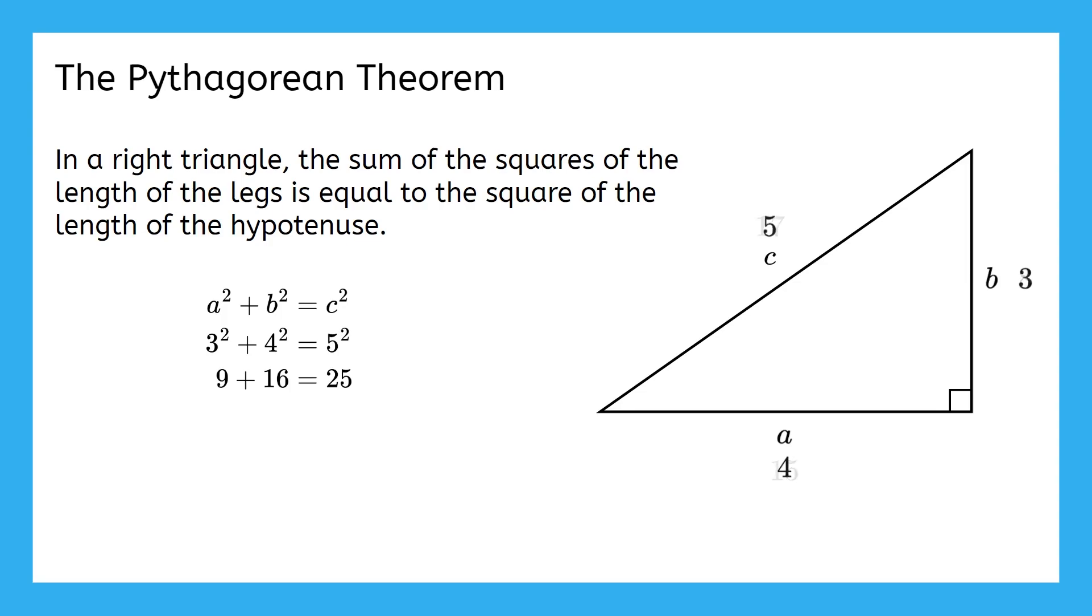Oh, and one more thing. Did you notice that we wrote 3 squared plus 4 squared, even though 3 is actually b and 4 is actually a? Well, we could have just as easily written 4 squared plus 3 squared and gotten the same answer since addition is commutative.